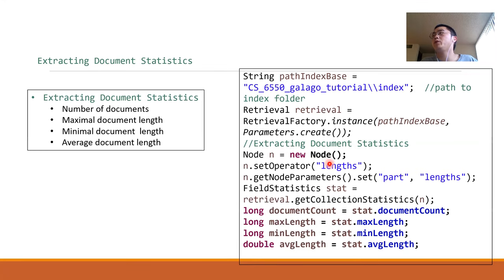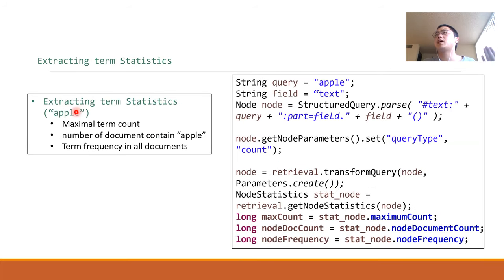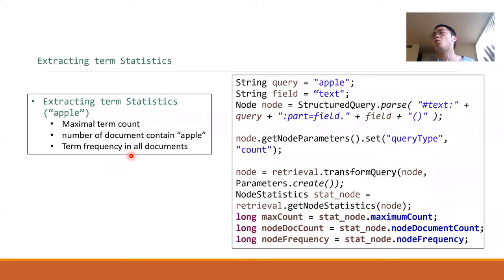The typical procedure is to build a load object and fill in some parameters, then put that load into an instance of the retrieval factory, and then we can know some statistics. For example, one line gives you how many documents are in the corpus. Besides document statistics, we can also get term statistics. For example, if we are interested in the word 'IPL,' we can use Java code to find the maximum term count, the number of documents containing IPL, and the term frequency across all documents.